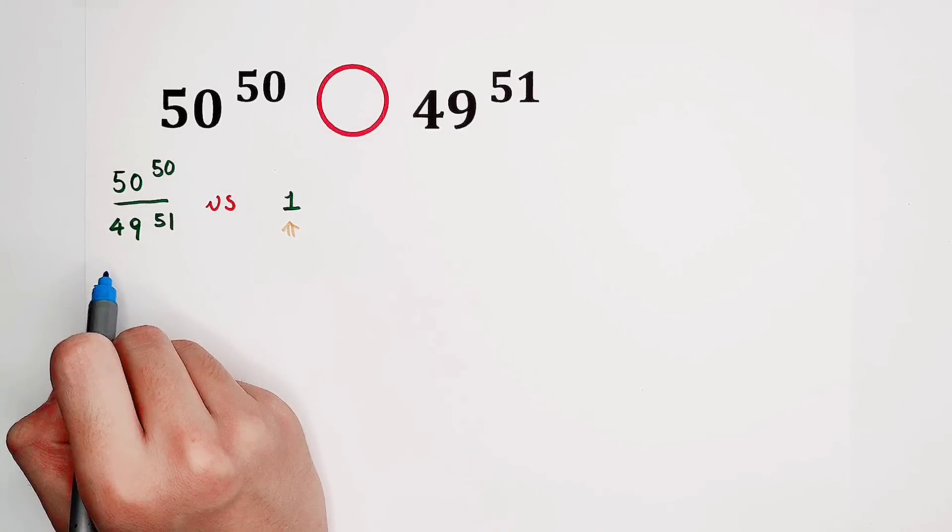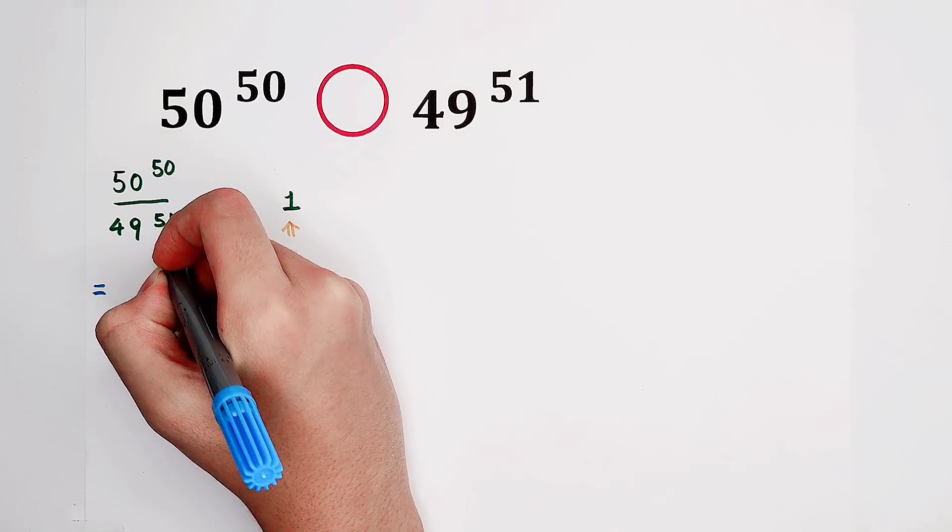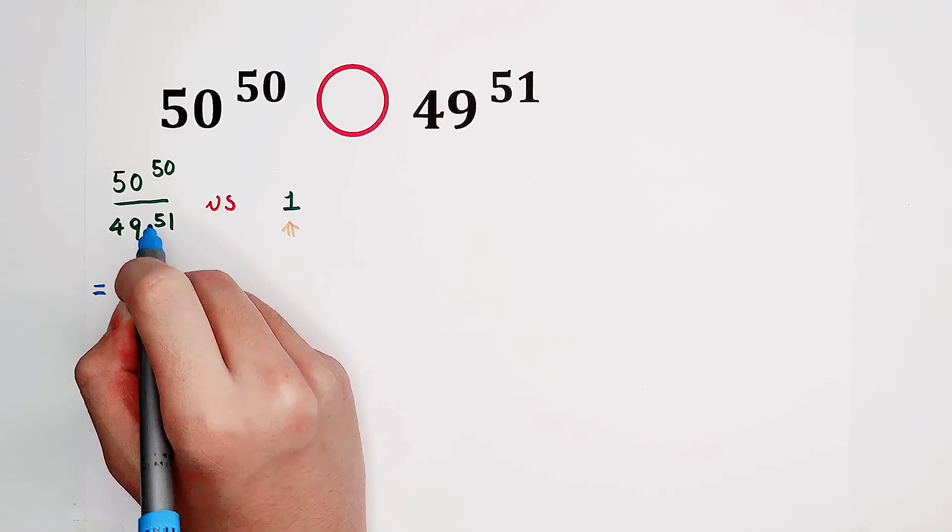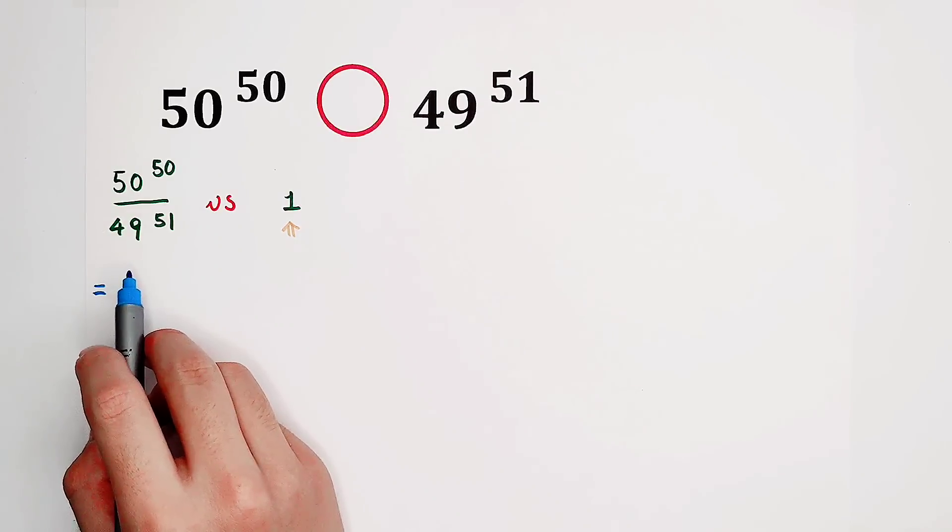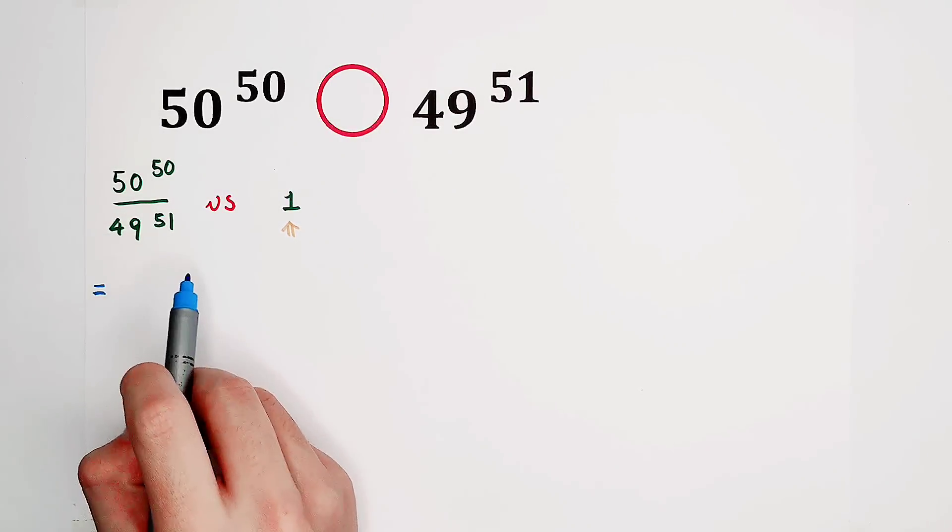We cannot change the basis since it's very hard. The exponent we can change. We can write 51 as 50 plus 1. So the denominator can be written as 49^50 times 49.